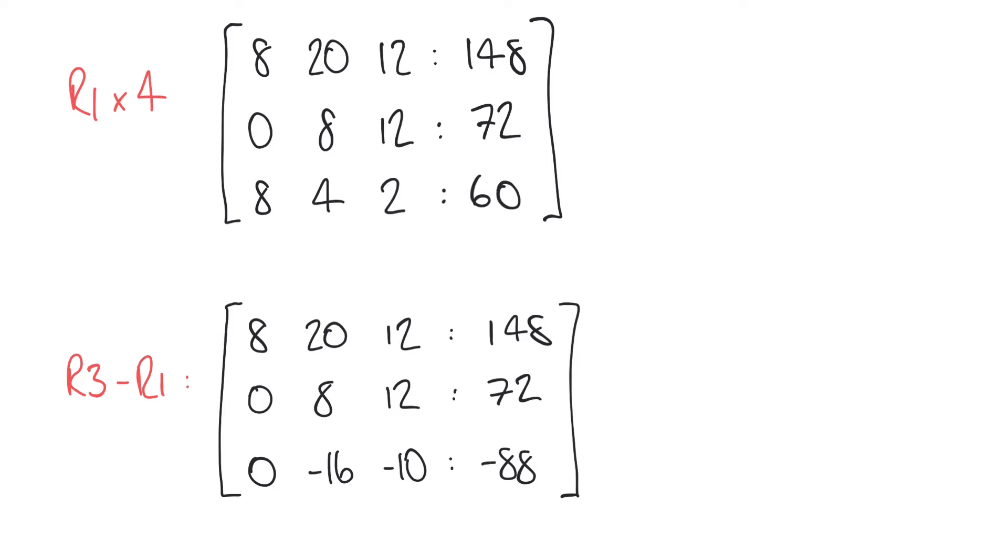And so 8 subtracting 8 in the third row we're going to be left with 0. 4 minus 20 we're going to be left with minus 16. We're allowed minus values, that's not a problem. 2 minus 12 we're left with minus 10 and our result here is going to be 60 minus 148 which is minus 88.